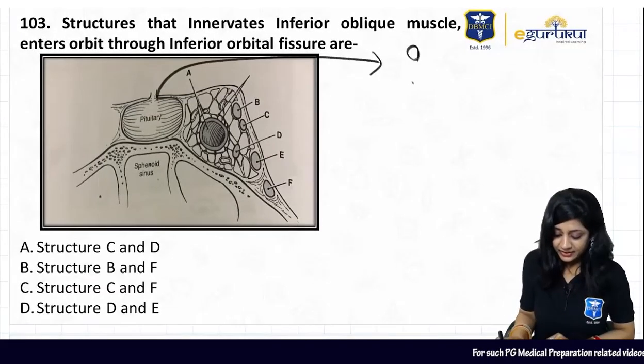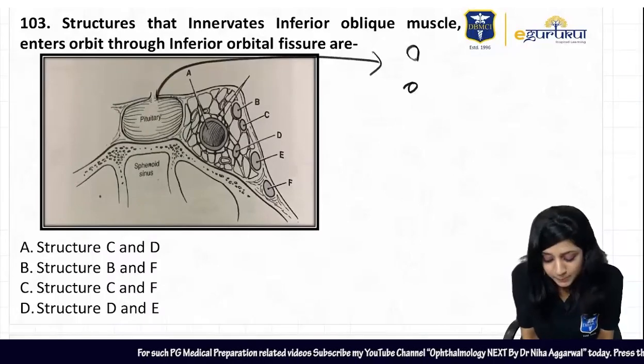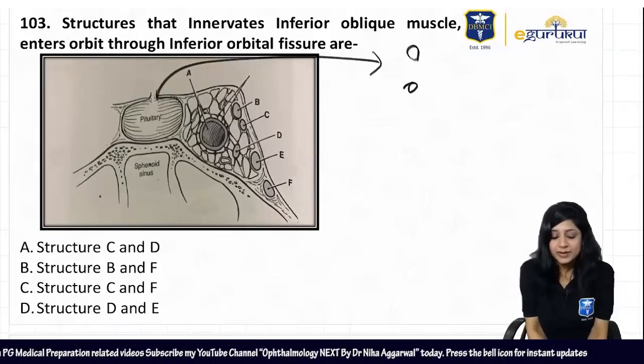What is this structure? By the way, structures which are innervating the inferior oblique muscle entering the orbit through the inferior orbital fissure.